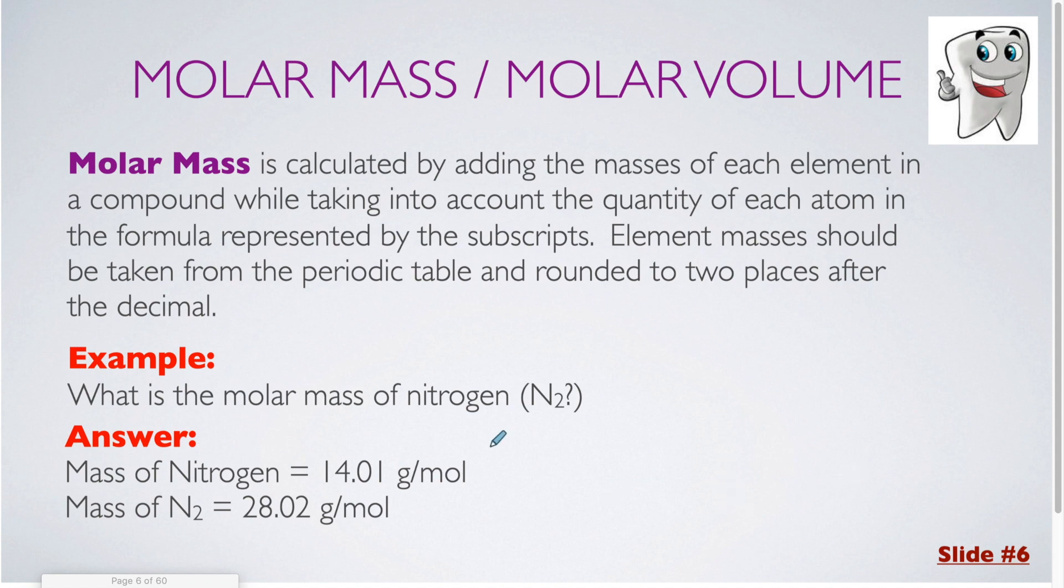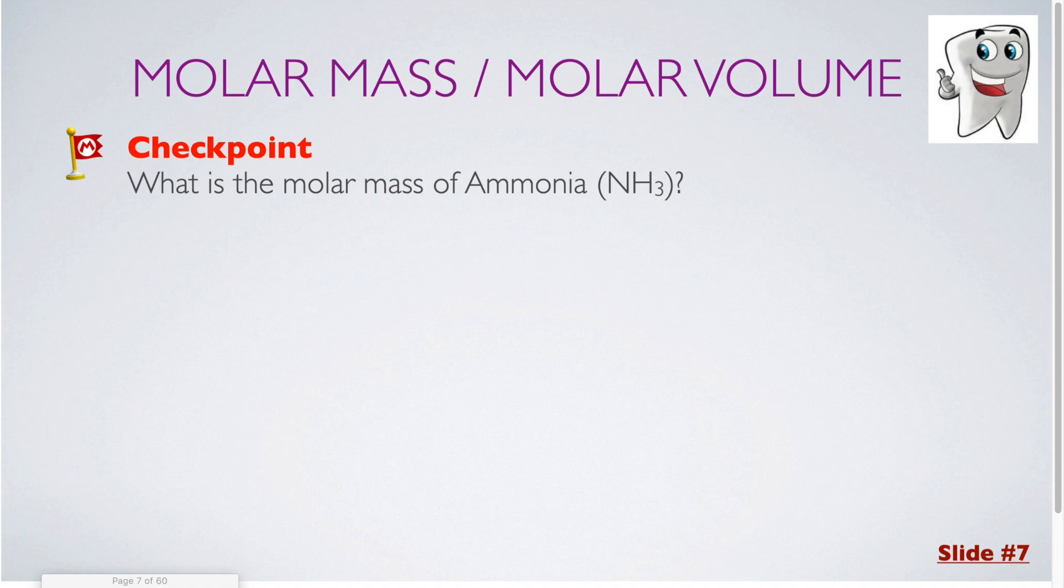For our example here, what is the molar mass of nitrogen, N2? We know that a single nitrogen would be 14.01 grams per mole from the periodic table, but in a molecule of nitrogen, since it is a diatomic element, I have two of them. So I need to multiply this mass by two. So I have 28.02. If this was a compound, I would take the subscripts into account and I would also add up the masses for each of the individual elements within that compound. And that is what we're going to see in our next checkpoint.